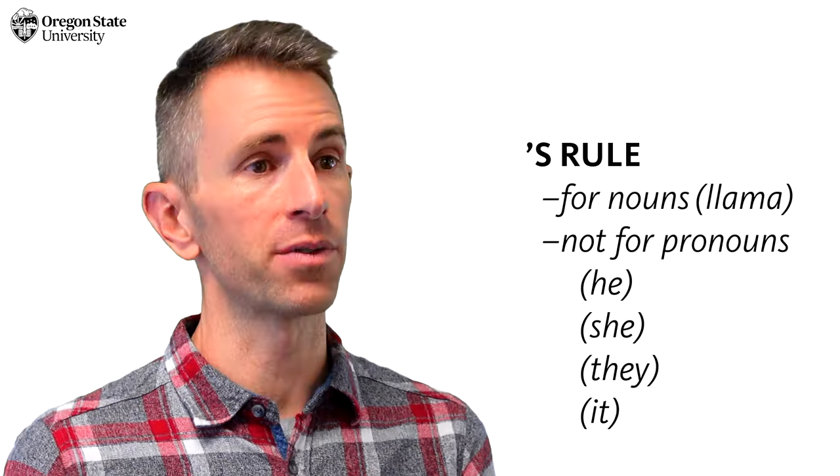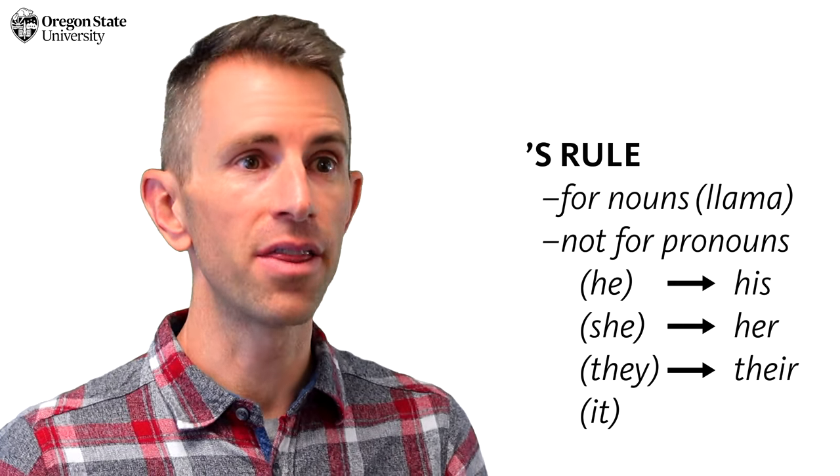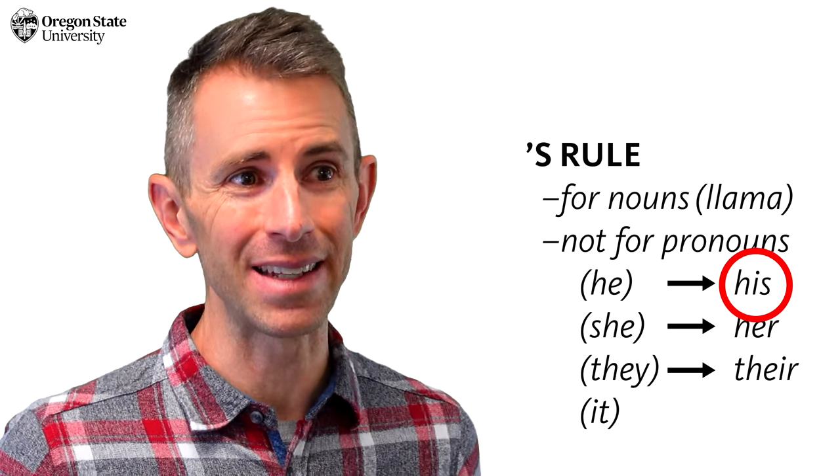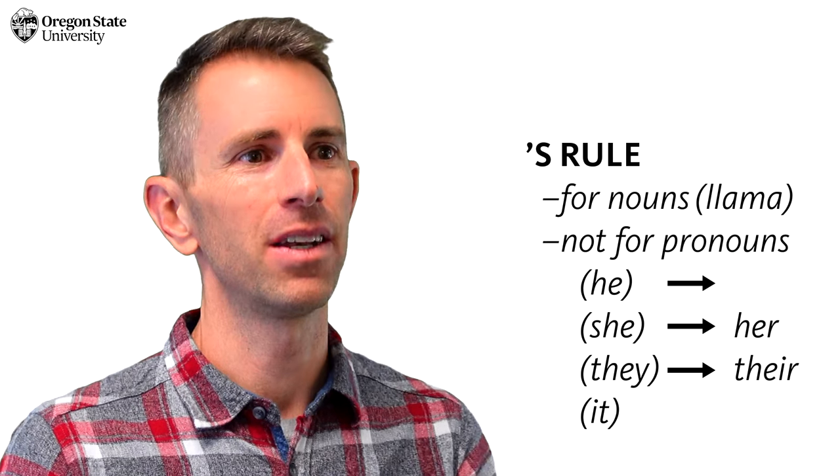Instead, we have special pronouns that show possession. We would say his teeth, her teeth, their teeth. We don't use apostrophes for any of those words, not even the one that ends in s. His teeth? He's teeth? No. His teeth.